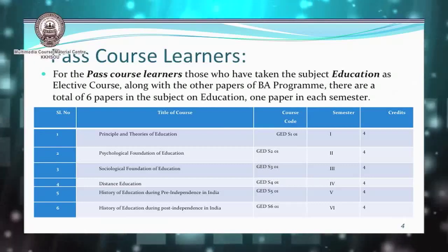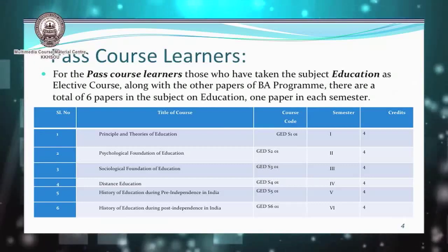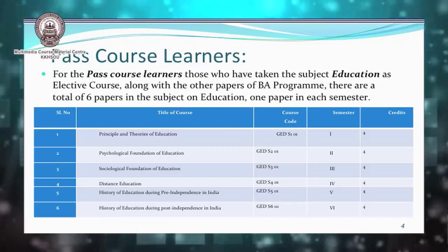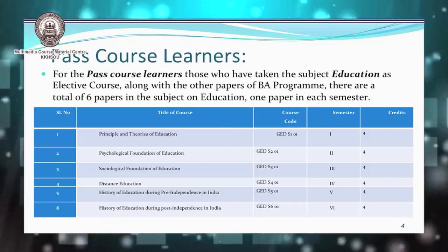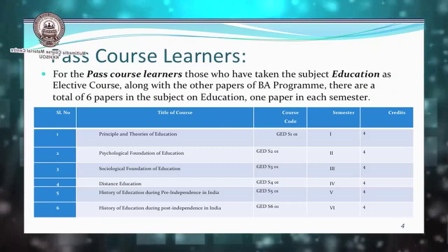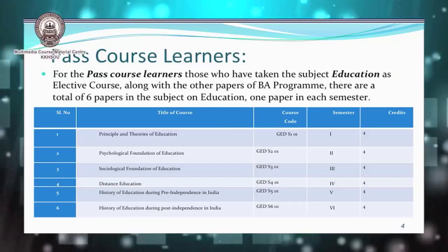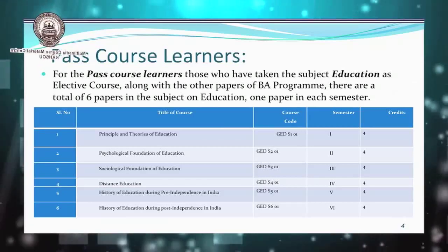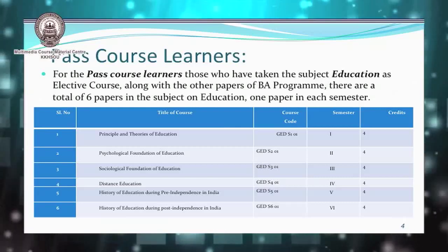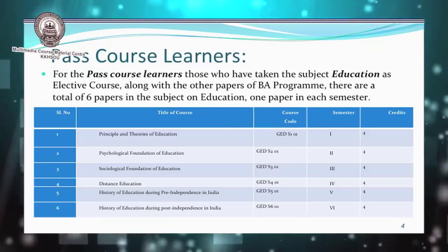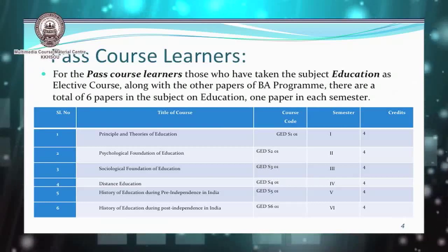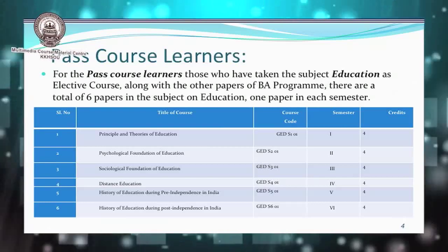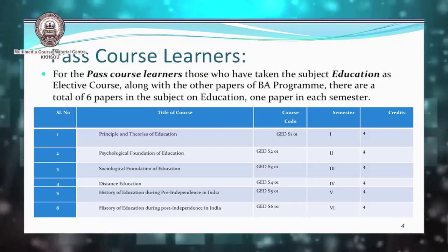For the first semester, the title of the paper is Principles and Theories of Education. In the second semester, the paper is on Psychological Foundation of Education. In the third semester, the paper is Sociological Foundation of Education. In the fourth semester, the paper is on Distance Education. In the fifth semester, the title of the paper is History of Education during Pre-independence in India. And in the sixth semester, the title of the paper is History of Education during Post-independence in India.